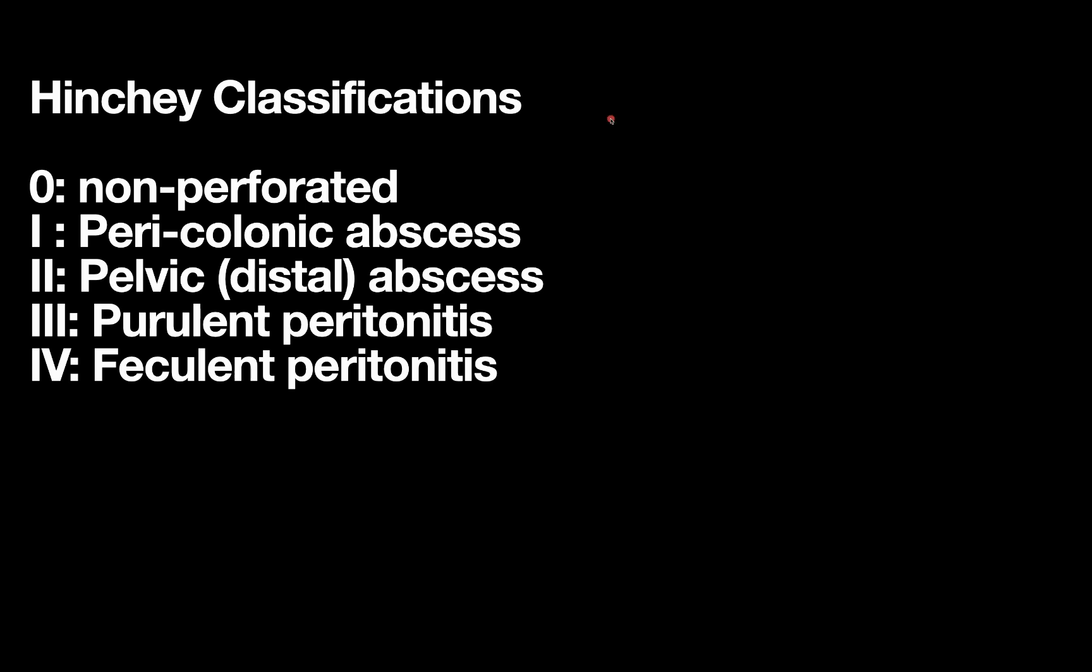Depending on how severe the disease is, we like to classify diverticulitis into these Hinchey classifications. Typically, we talk about one through four. I included zero on here because actually, most diverticulitis is class zero and non-perforated, so it's important for us to talk about that. But then we've also got what we most commonly deal with surgically, Hinchey class one through class four, going from least severe to most severe. And we're going to talk about how we manage these different presentations of diverticulitis on the upcoming slides. But the basics of what you need to know is the higher the Hinchey number, the more severe the diverticulitis, and the more intensive treatment.